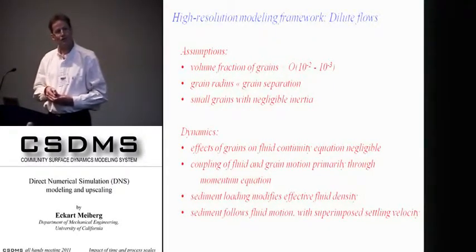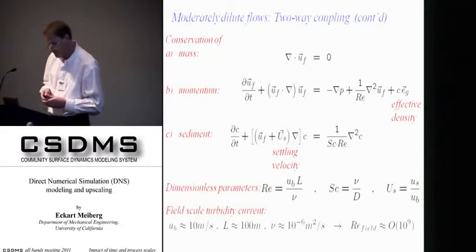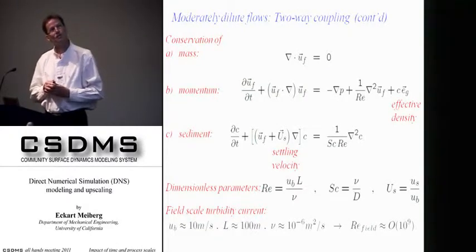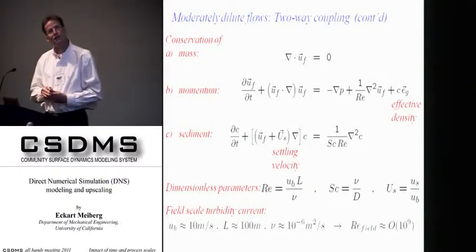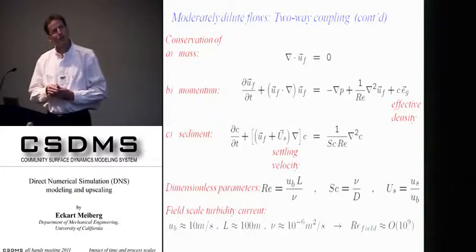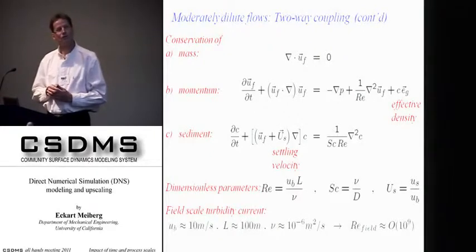The sediment is assumed to follow the fluid motion and have a superimposed settling velocity. So these are our governing equations: we have the fluid continuity equation, the conservation of momentum — where C is the sediment concentration and the effective density term appears — and gravity acts on those density variations to drive the flow. The sediment is tracked by means of a convection-diffusion equation, where we assume the sediment moves with the fluid velocity plus a superimposed settling velocity.